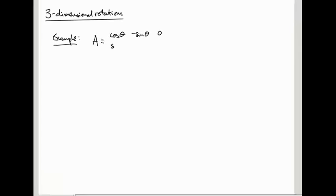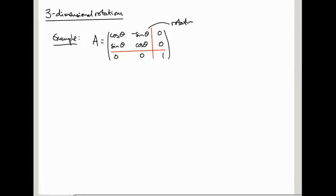First example: a rotation matrix in 3D. It's cos θ, -sin θ, 0; sin θ, cos θ, 0; 0, 0, 1. You can break this up into blocks — there's a 2x2 block up here, cos θ, -sin θ, sin θ, cos θ, which is rotating the xy-plane, and there's a 1 down here, which means the z-axis is fixed.